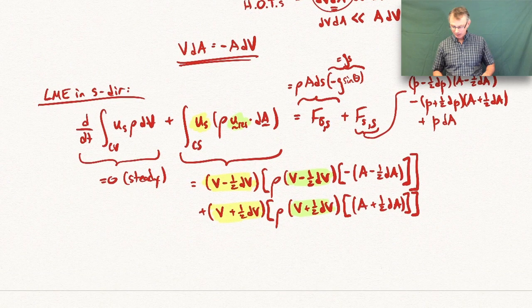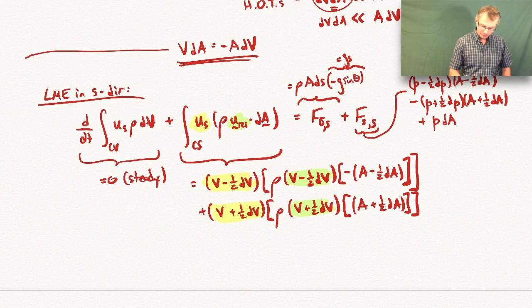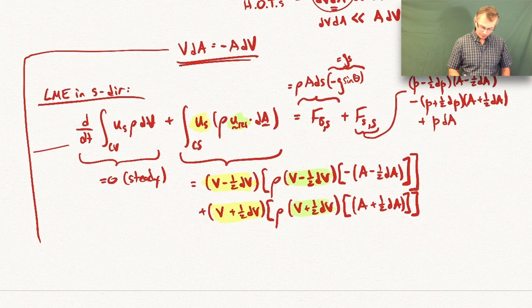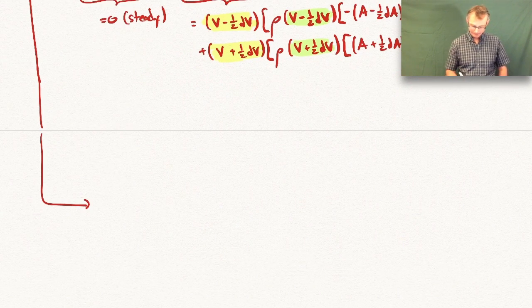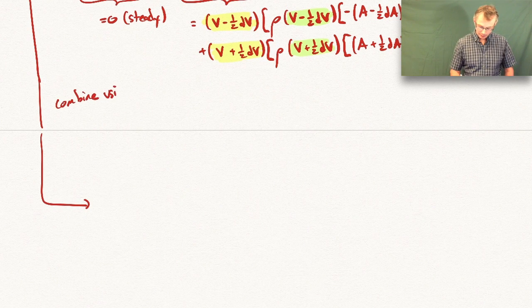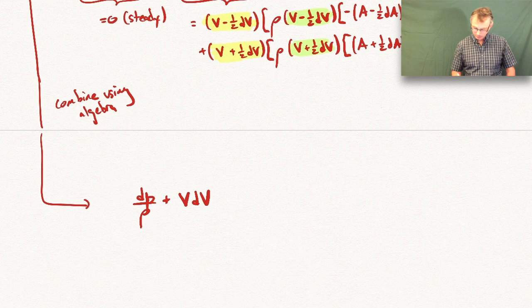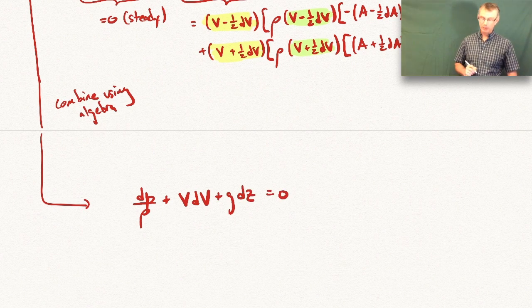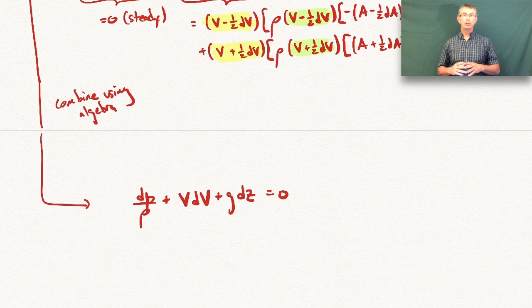When we neglect higher-order terms — for example, a d-quantity squared is much smaller than a single d-quantity — and we combine the linear momentum equation with conservation of mass using algebra, we end up with: dP/rho + V·dV + g·dz = 0. This is the differential form of Bernoulli's equation. The terms may look familiar from a thermodynamics course.